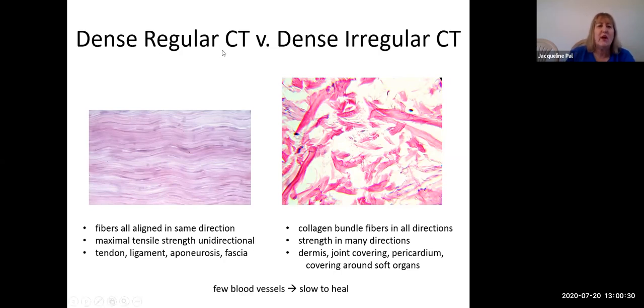In comparison to dense regular connective tissue, in dense irregular connective tissue we can see the collagen fibers in multiple directions. These right here are going between like one and seven o'clock, these are going ten to four o'clock, some are more horizontal, some more vertical - they go all different directions.